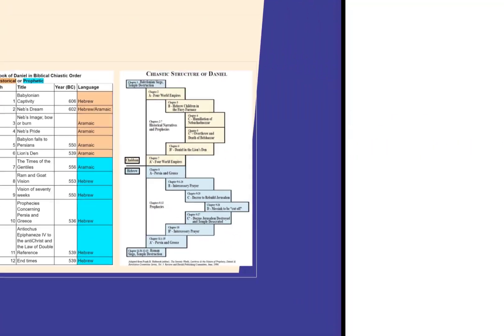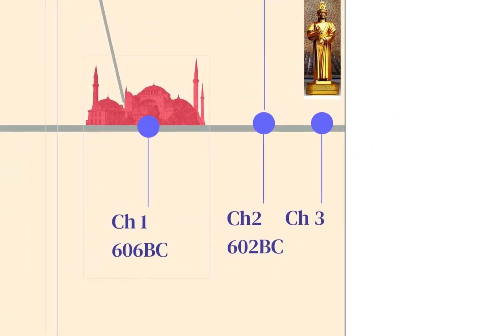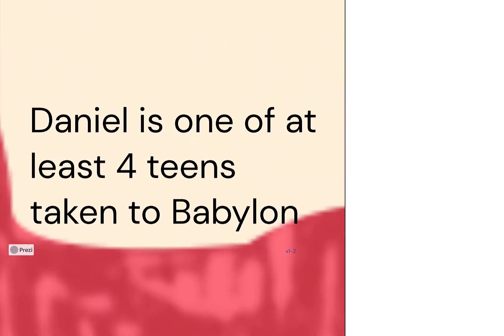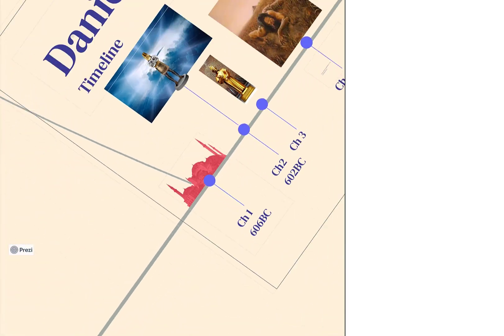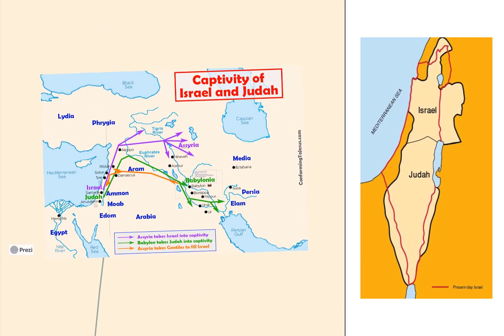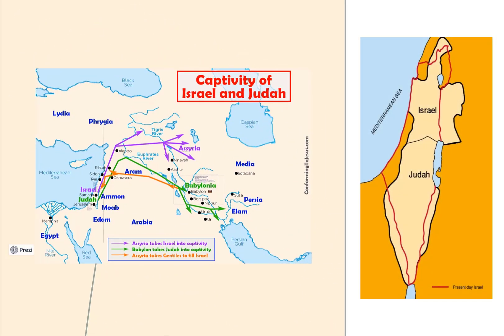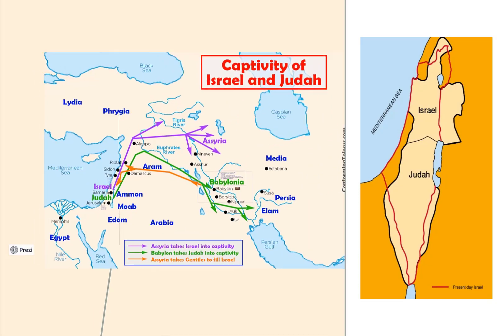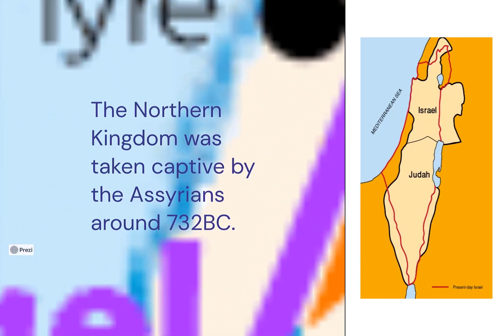Daniel is one of at least four teens taken to Babylon — about 800 miles away, a long trip. The northern kingdom of Israel had been cut into two kingdoms; the northern kingdom was taken captive by the Assyrians around 732 BC.